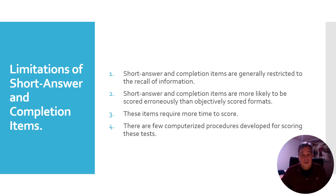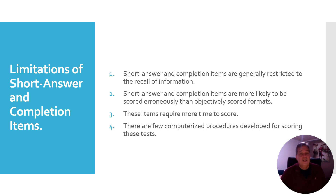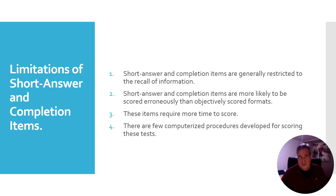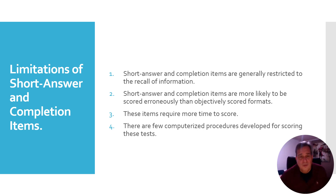There are some limitations to short answer and completion items. They are basically restricted to recall of information — these are lower-level thinking skills. Short answer and completion items can be scored erroneously and take more time to score. Some computerized means exist for using these, but sometimes they don't auto-score well, or they're so restrictive that a student who enters an incorrect character due to a typo or uses an alternative spelling will not be recognized for having answered correctly.